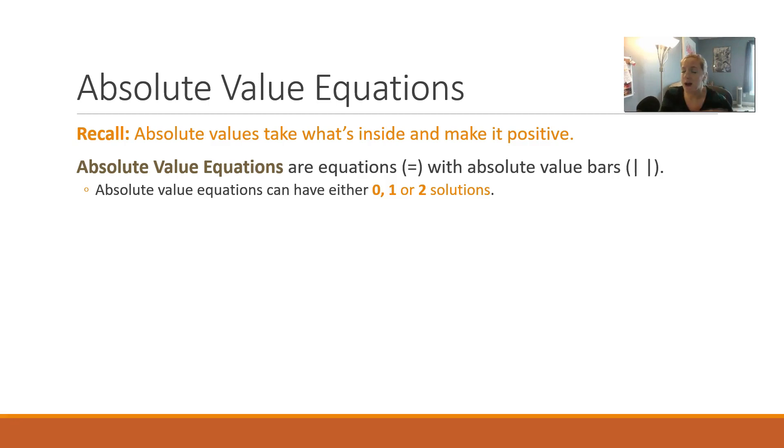Recall that absolute values take what's inside those absolute value bars and make it positive. For example, absolute value of 5 would be 5. Likewise, if I had negative 5 inside those bars, it would pop out positive 5.